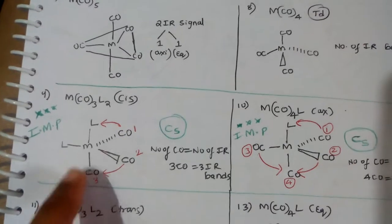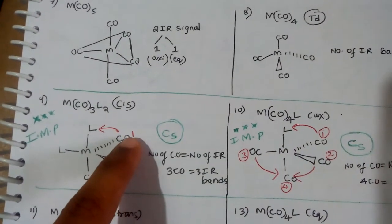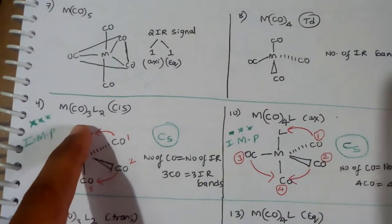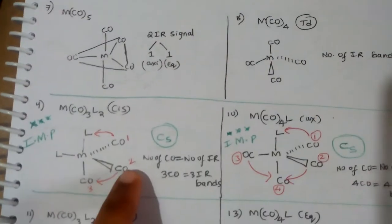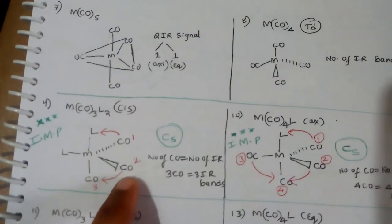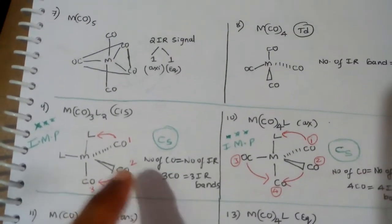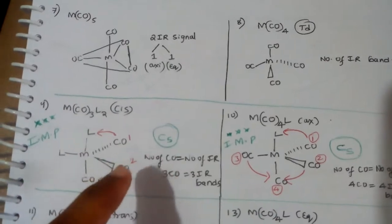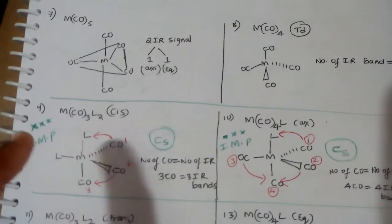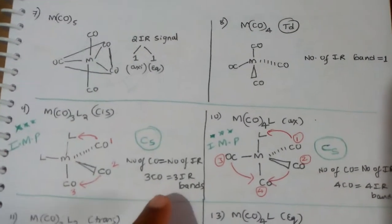Because this CO is in a different environment — it is cis to this ligand. This CO is in another environment. Therefore, all three give three different bands. So, three IR bands.